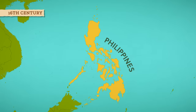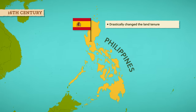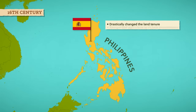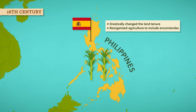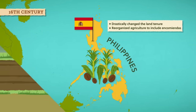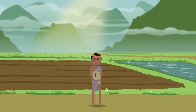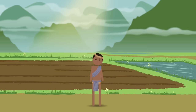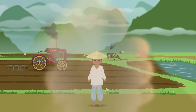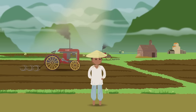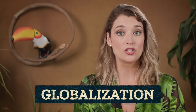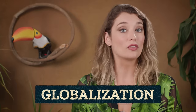In the 16th century, the Philippines were colonized by the Spanish, who drastically changed the land tenure, or who had rights or access to land. They reorganized agriculture to include encomiendas, which were plantations with a range of commercial crops, from sugar to tobacco to coffee. The Filipino workers still had ownership of the land in theory, but in practice they were subject to high taxes. In the process, land rights shifted from subsistence plots to increasingly commercialized agricultural activities. And this mass production of food for export has contributed to current-day capitalism and the globalization of our food supply.